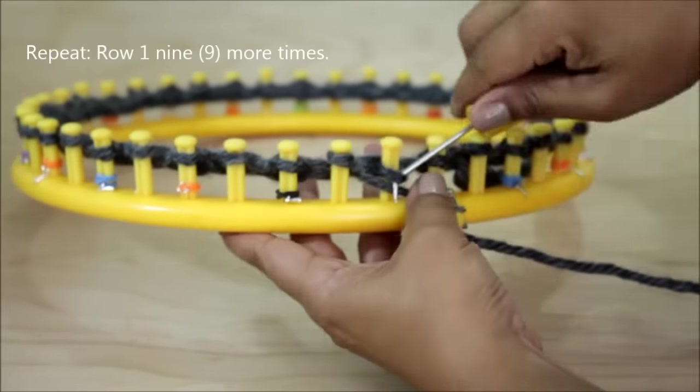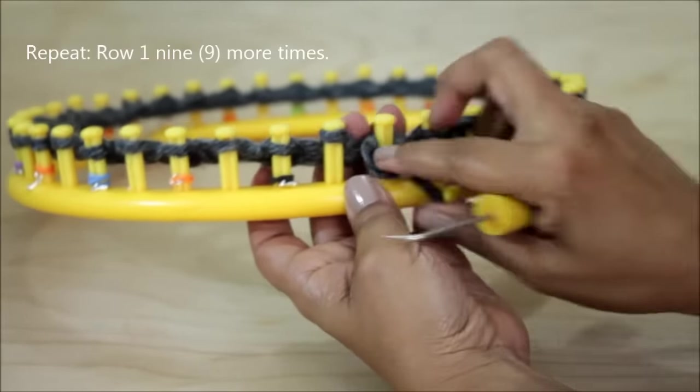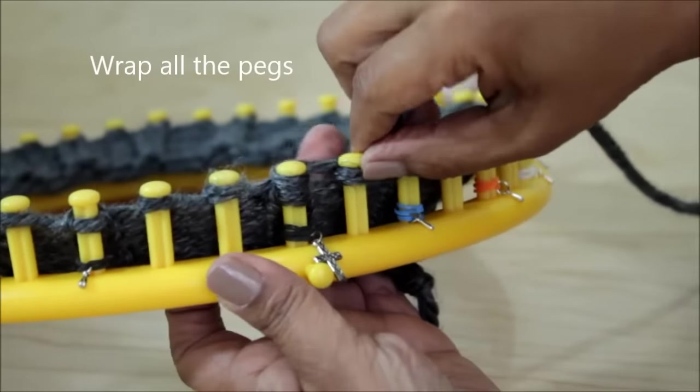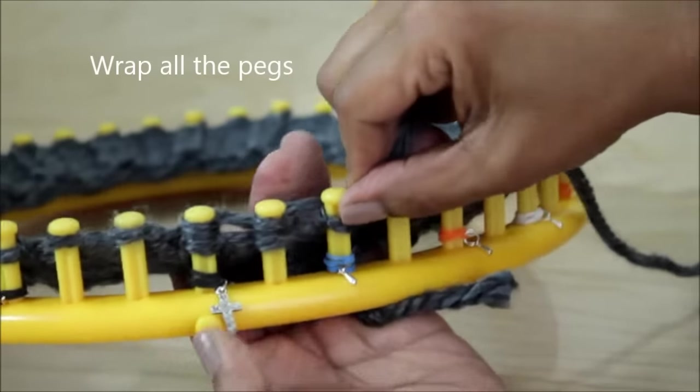When you finish doing your ten rows of the knit one, purl one, we will start with rows 11 through 12, which are two rows of the e-wrap knit stitch. To do this, first you're going to wrap all of your pegs.